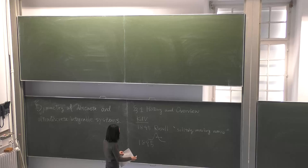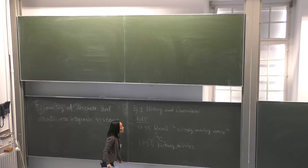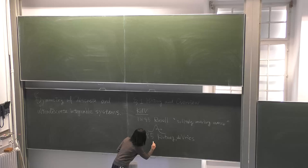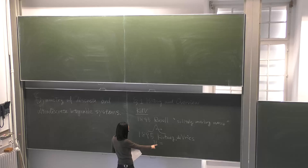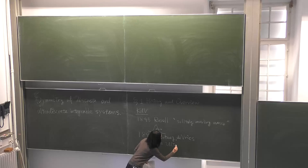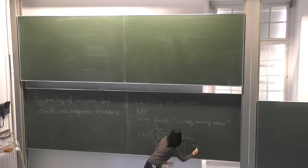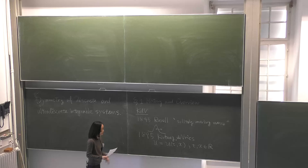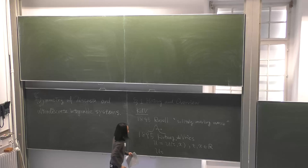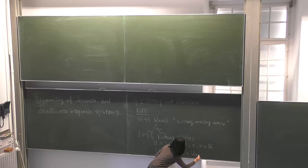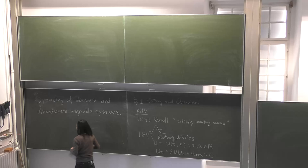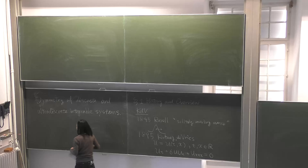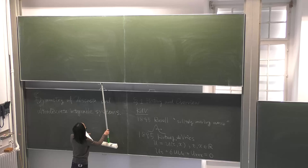In 1895, Korteweg and de Vries succeeded in formulating this interesting solitary moving wave using a differential equation. Here u is the dependent variable for dynamics — it means the height of waves, and it depends on time and space, both real-valued because it is originally physics. The equation is: u_t plus 6u·u_x plus the third derivative of u equals zero. This is the famous Korteweg–de Vries equation, which we call KdV for short.